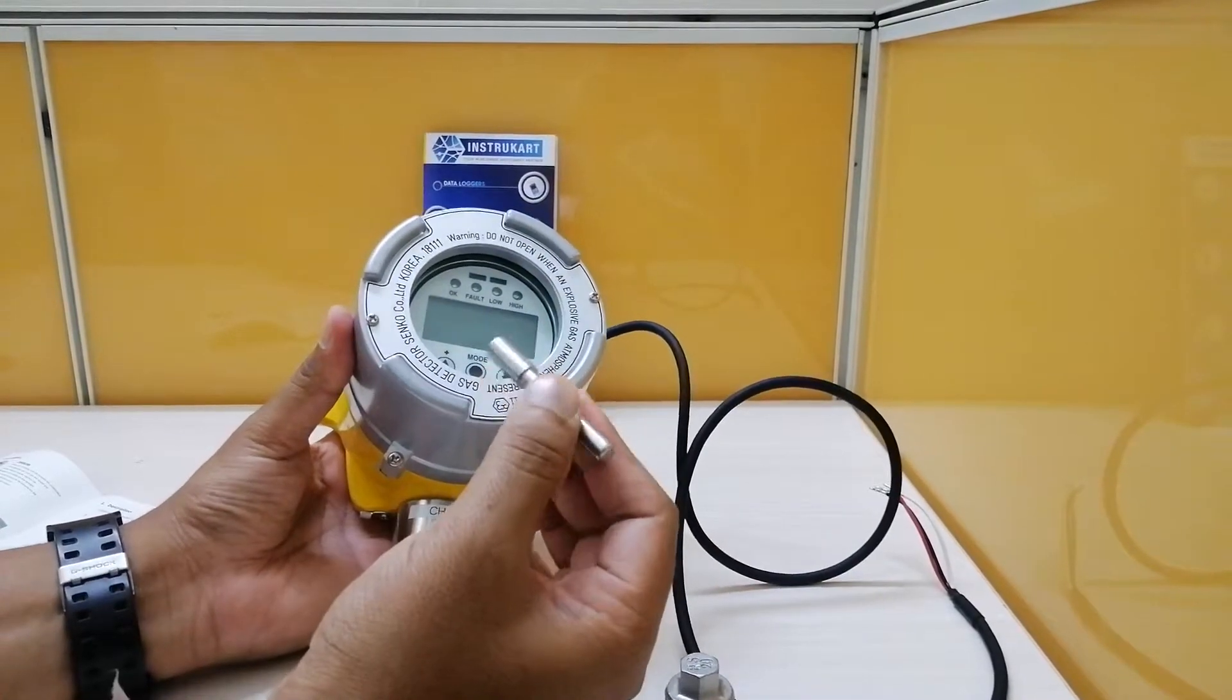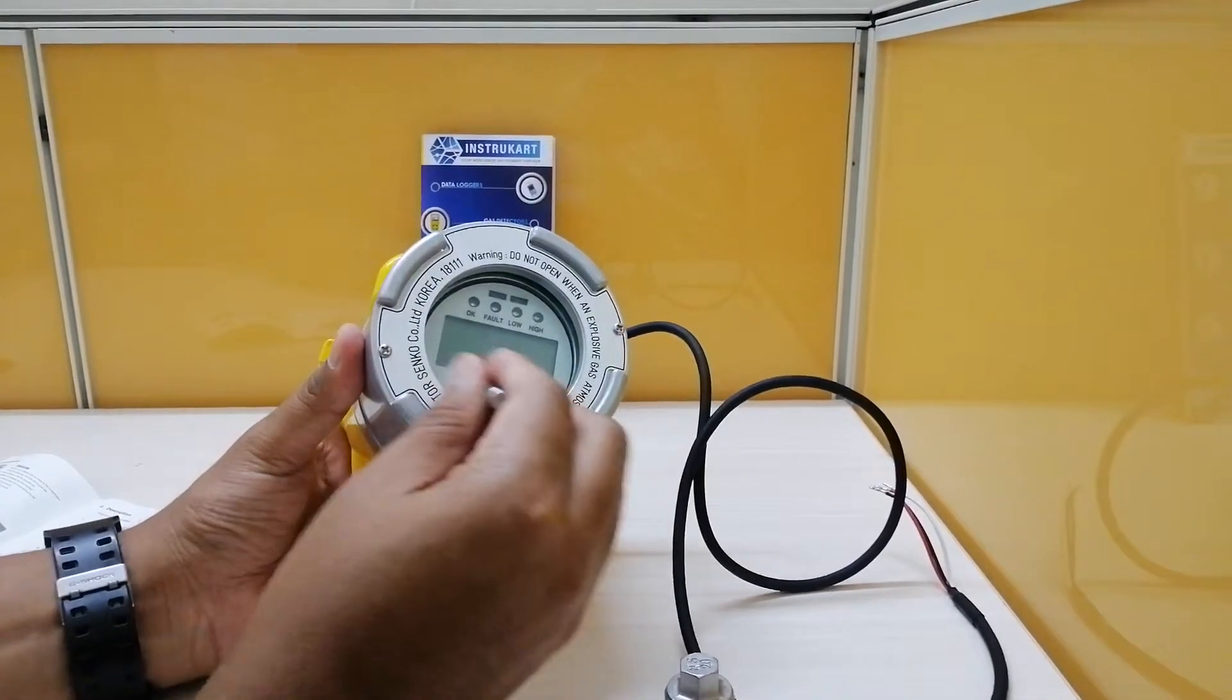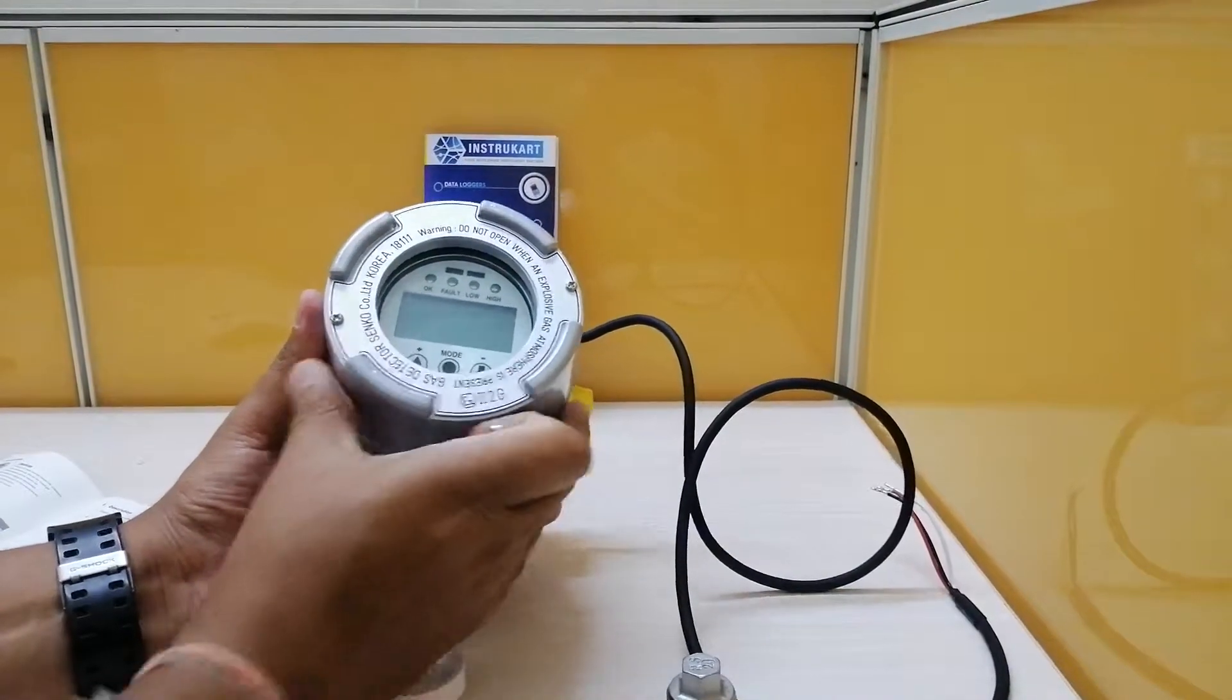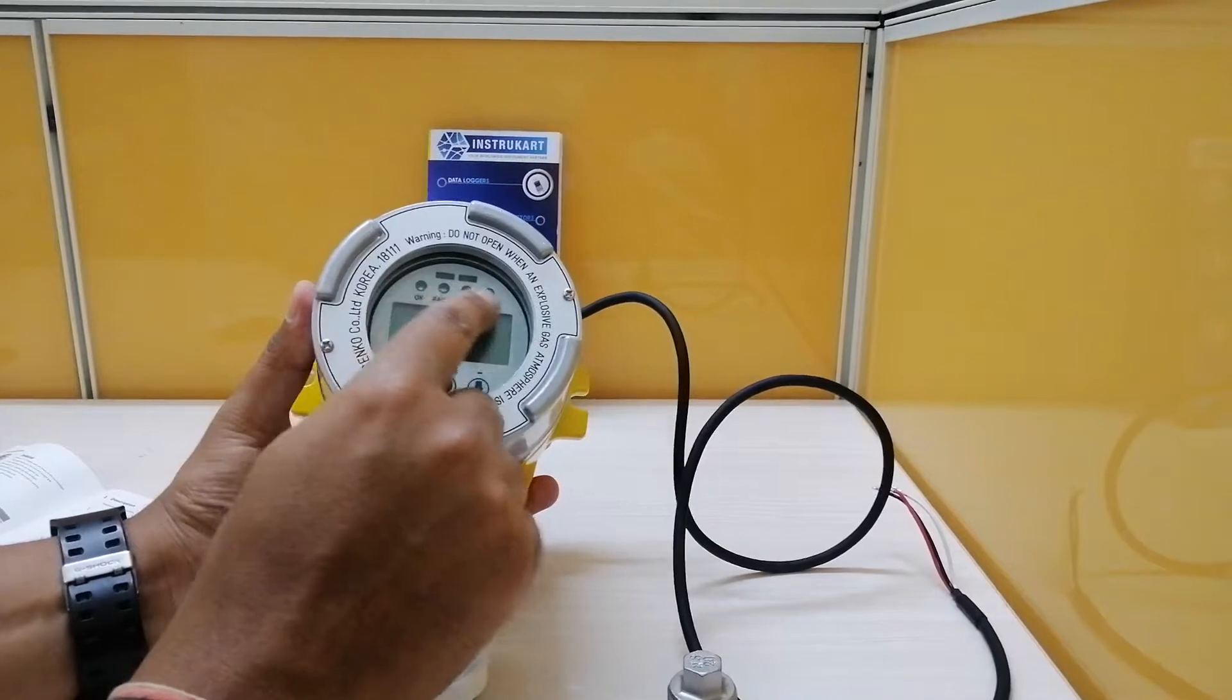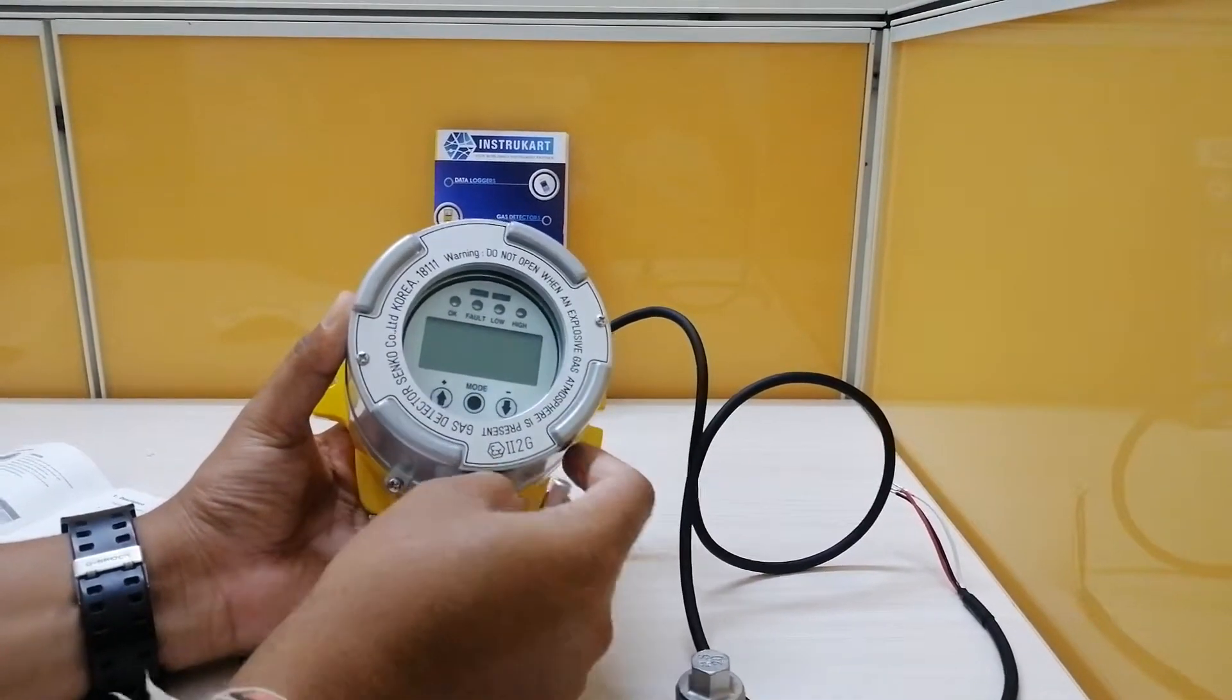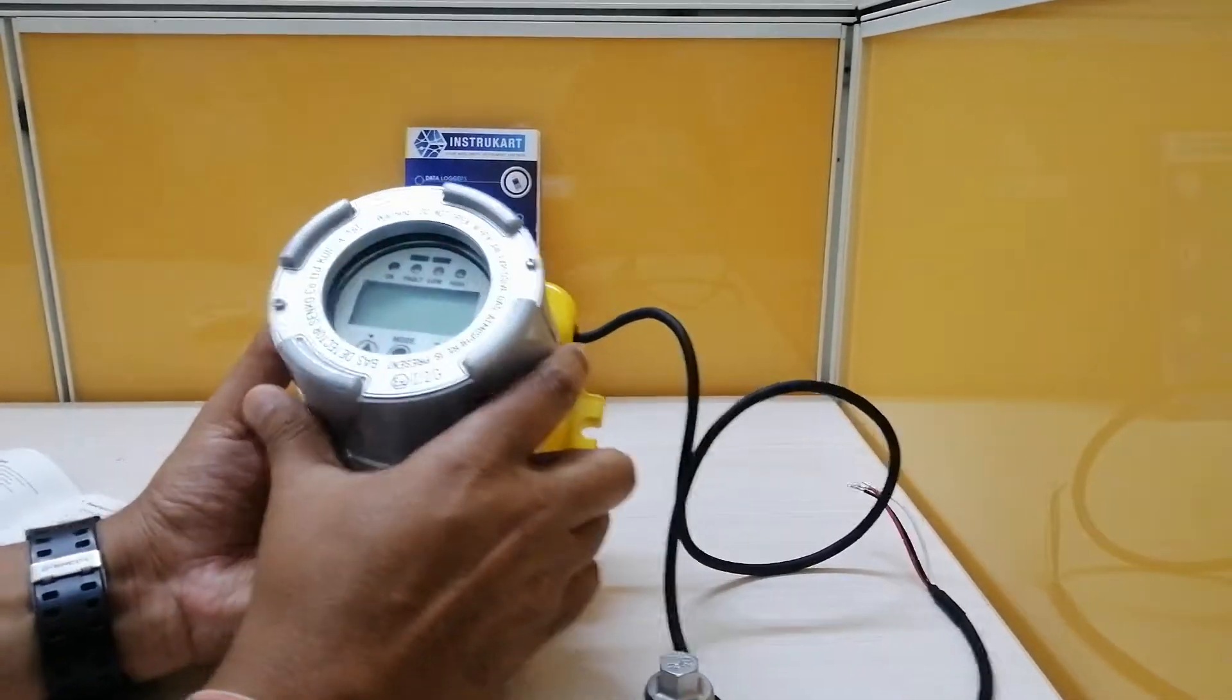This is a magnetic key which is used for configuration. It has indication lights that you can see: OK, FAULT, LOW, and HIGH, which indicate the alarm status and modes.